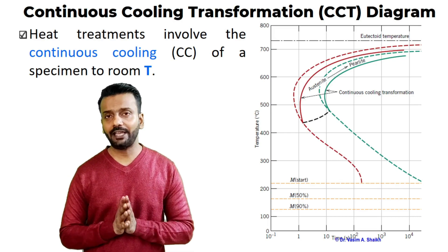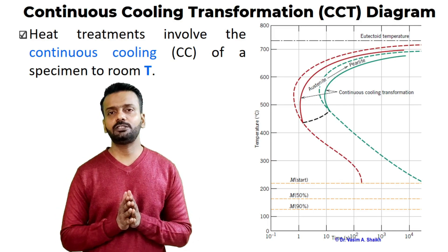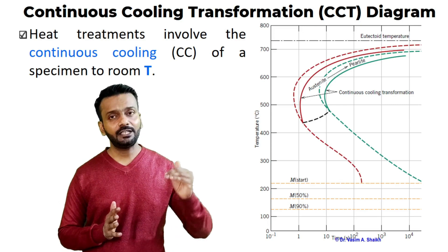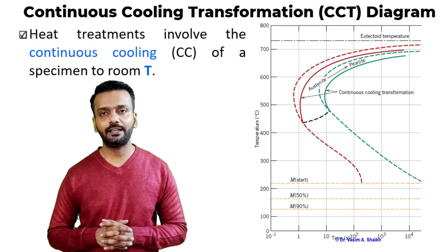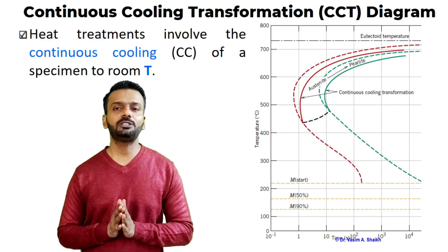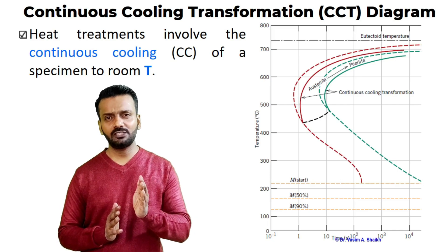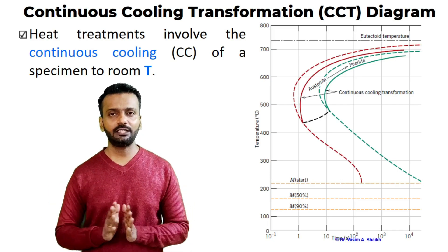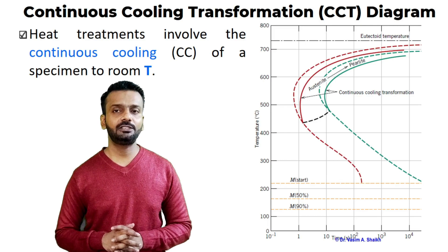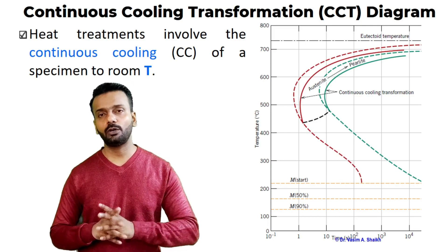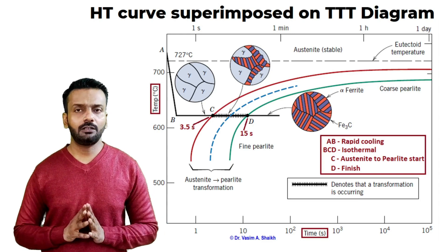To address this limitation, we use the CCT diagram — Continuous Cooling Transformation. This tells us the start and end times of transformation when the material is continuously cooling, making it a much more practical diagram. In the CCT diagram, all transformations shift slightly to the right compared to the TTT plot — that is the only change — and it gives us exactly the temperature and time needed to achieve a particular phase.